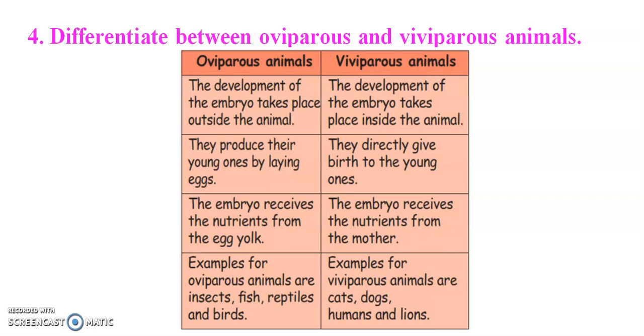The main difference: oviparous animals reproduce by laying eggs, whereas viviparous animals directly give birth to young ones.